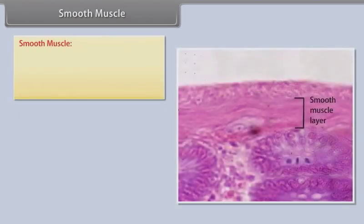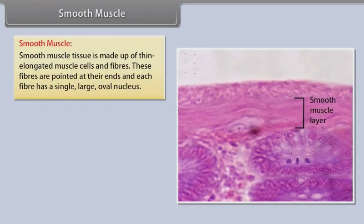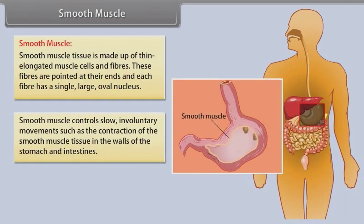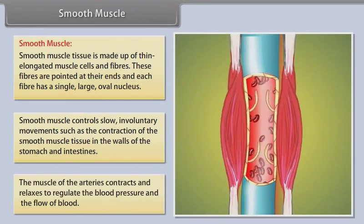Smooth muscle tissue is made up of thin elongated muscle cells and fibers. These fibers are pointed at their ends, and each fiber has a single large oval nucleus. Smooth muscle controls slow involuntary movements, such as the contraction of smooth muscle tissue in the walls of the stomach and intestines. The muscles of the arteries contract and relax to regulate blood pressure and the flow of blood.